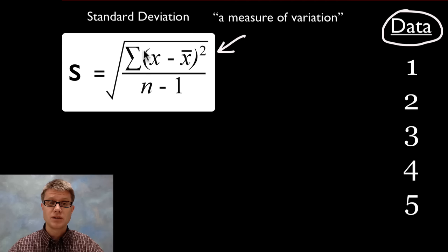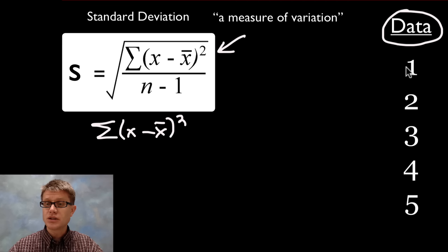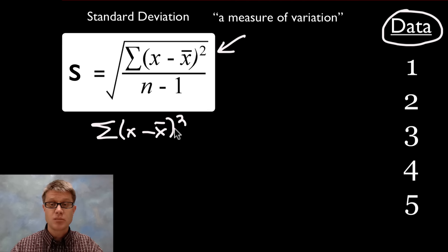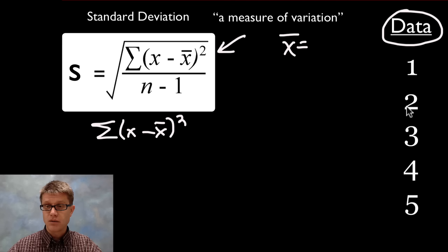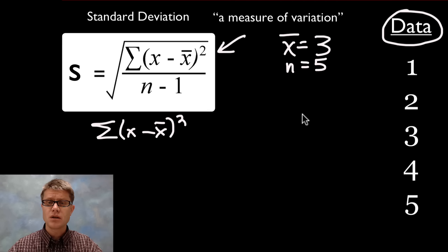Let's look at what's going on underneath that square root. The summation of (x minus x-bar) squared basically means for each data point we have to figure out x minus x-bar. The first thing we have to do is figure out what the average is — what x-bar is. If I add 1, 2, 3, 4, 5 together I get 15, and if I divide that by n which is 5, the average is 3. So the mean is 3.